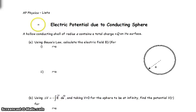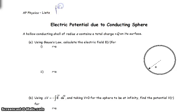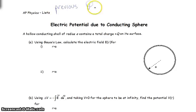This video is about finding the electric potential due to a conducting sphere. In the previous videos, we found the electric potential by saying that the total potential is equal to the sum, or the integral, of the potentials due to each individual piece.